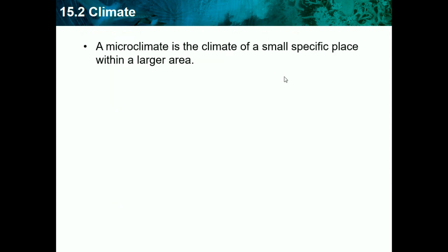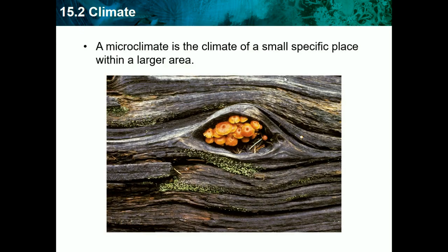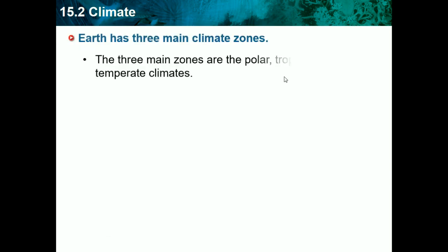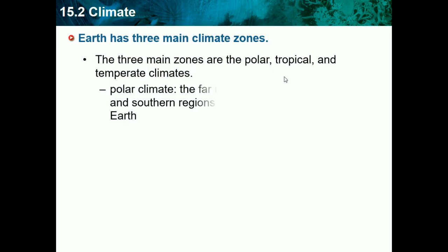A microclimate is the climate of a small, specific place within a larger area — basically just a little climate in a smaller area. Earth has three main climate zones: the polar, tropical, and temperate climates.